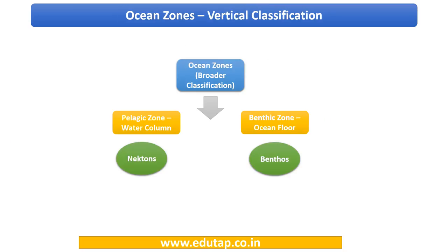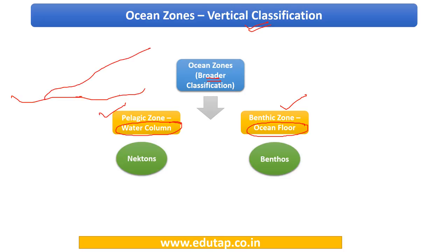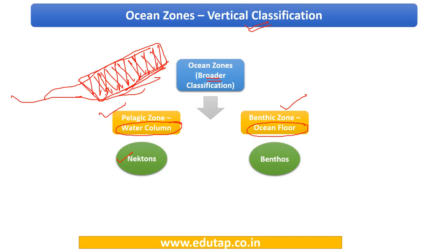Now let us look at vertical classification. On a broader basis, ocean zones can be classified into the pelagic zone and the benthic zone. The pelagic zone refers to the water column, and the benthic zone refers to the ocean floor. Organisms that reside in the pelagic zone — the water column — are called nektons. Those organisms that reside on the ocean floor are referred to as benthos.